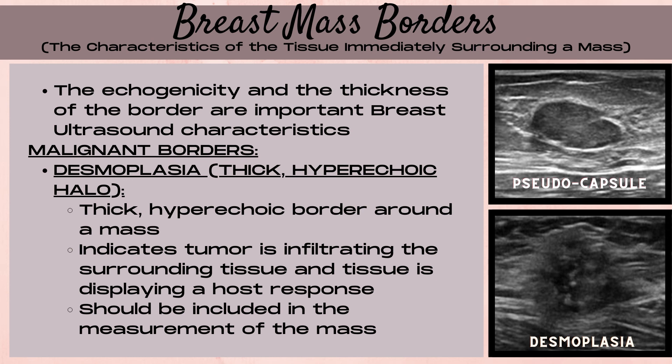With desmoplasia, the mass is trying to expand via spiculated, angular, and microlobulated borders, and the body has launched a host response in which it's created fibrosis around the mass in an effort to stop its growth. It's a combination of these irregular mass margins and the body's tissue fibrosis or host response that creates this thick, hazy, echogenic halo around the mass.